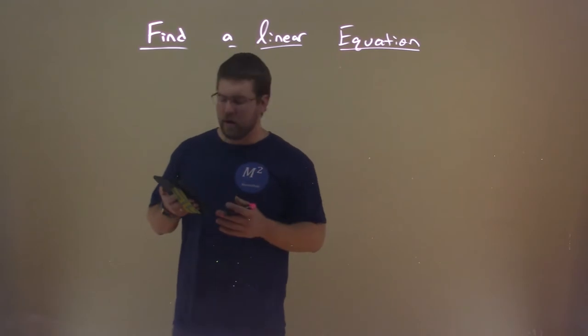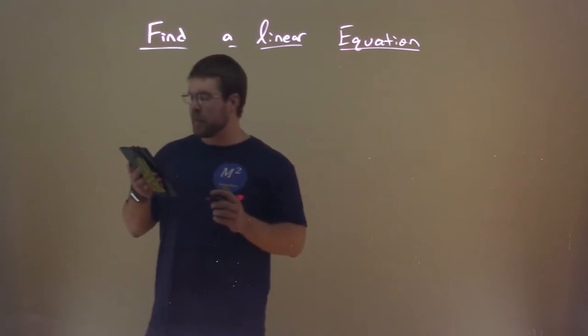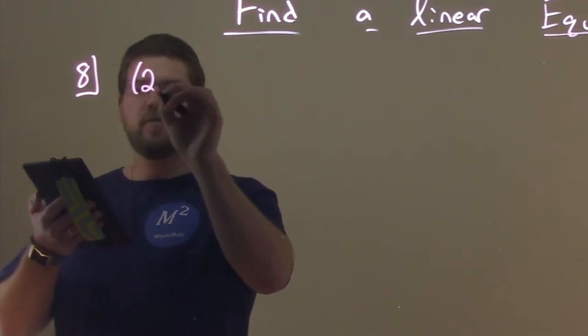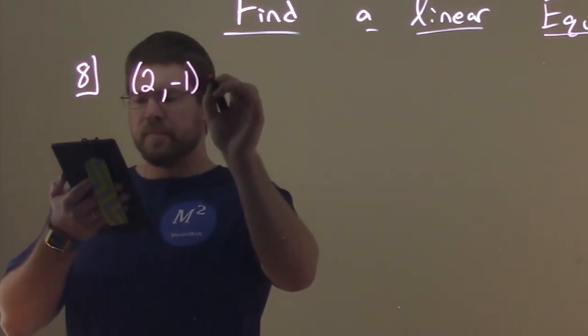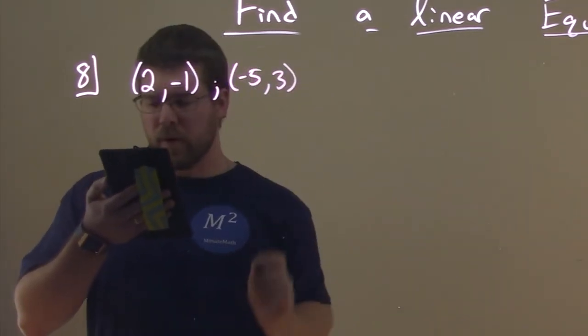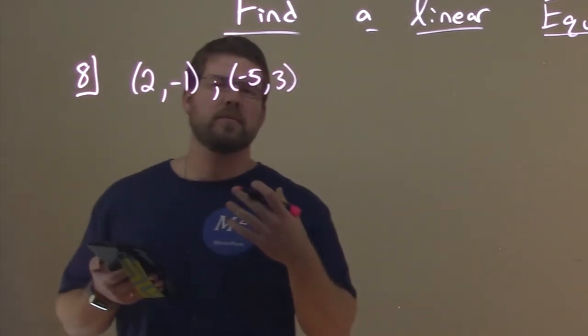So let's go find a slope given two points. Let's go to the first one here. We're given two points, (2, -1) and (-5, 3). Alright, so let's label which one's point 1, point 2.